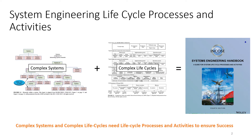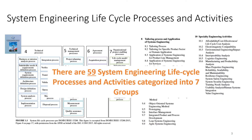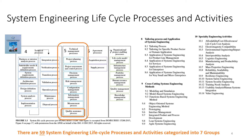As we've started off all the videos in the series, we point out that the System Engineering Handbook has kindly identified lifecycle processes and activities to make successful development of very complex systems designed in the presence of very complex life cycles. The Handbook identifies 59 system engineering lifecycle processes and activities, grouped into seven groups. The topic of this video is the Quality Assurance Process, which falls into the Technical Management Process Group.